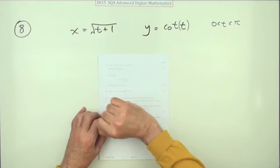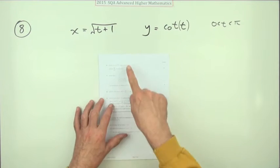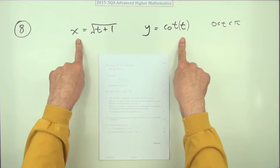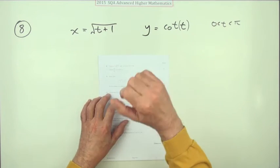Number eight from the 2015 Advanced Higher Maths, a three-mark question. We have a pair of parametric equations and you have to obtain dy by dx.